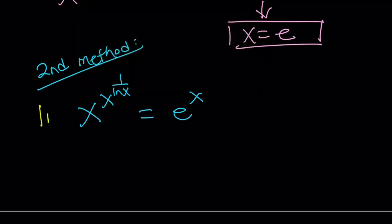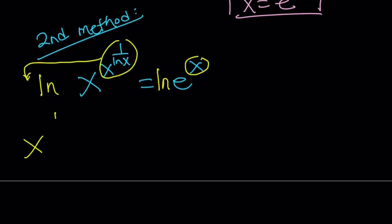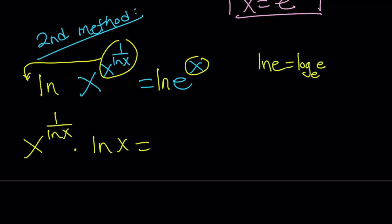What am I going to do? Take ln of both sides. The powers move: on the left the power is x to the 1 over ln x, and on the right it's x. Moving them to the front gives us x to the power 1 over ln x times ln x, equals x times ln e. Now ln e equals 1 because ln is base e, and log base a of a equals 1 by definition — meaning a to the power 1 equals a. So the right side is simply x.